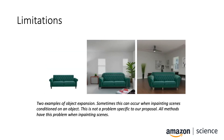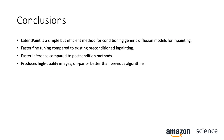Latent Paint does not come without limitations. A major one is object expansion, which causes identity shifts of the condition. This problem is shared by inpainting methods in general, and our proposal does not make an exception. To summarize, we propose Latent Paint, a simple but efficient method for conditioning generic diffusion models for the task of image inpainting. Latent Paint requires only a fraction of the fine-tuning steps compared to existing preconditioning inpainting, and performs inference at a fraction of the runtime of post-conditioning inpainting, all while producing high-quality images on par or better than previous algorithms. Thank you.